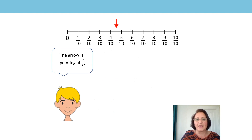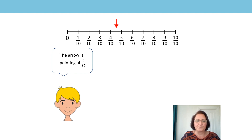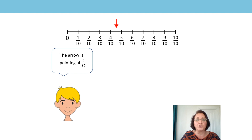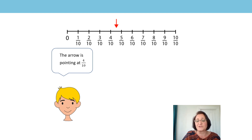Have a look at this arrow on the number line. Chen thinks that the arrow is pointing at four tenths — do you think he's correct? No, Chen is not correct. We know that four tenths is a number and has an exact point on our number line. The arrow is not pointing at the exact point where four tenths is — it's pointing at a number more than four tenths, as it has passed four tenths on the number line.